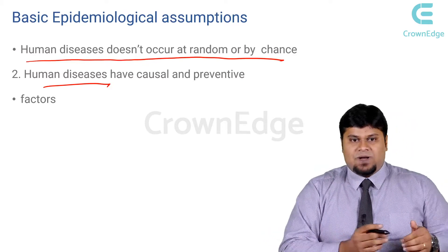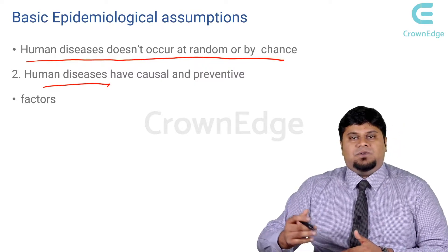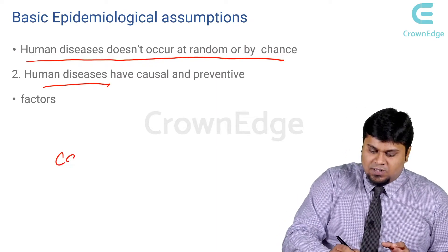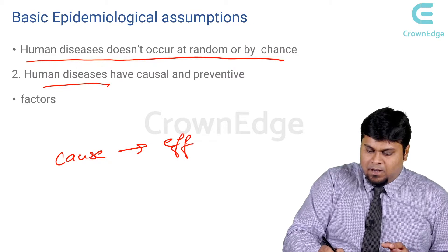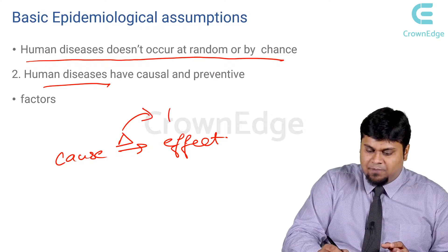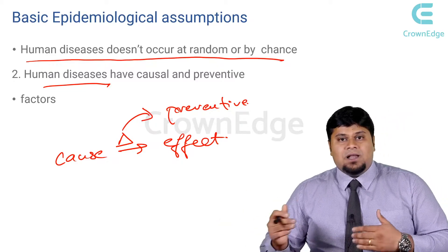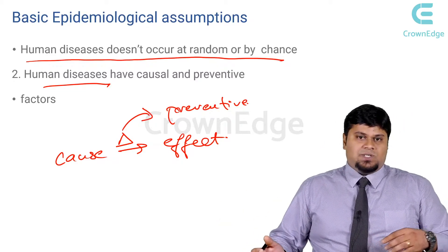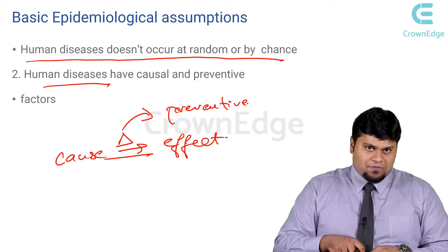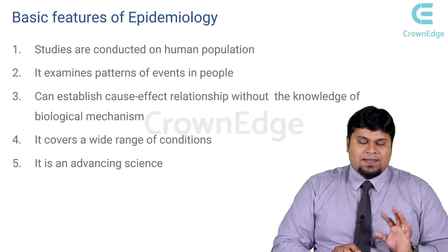Human diseases usually have causal and preventive factors. That means there is one particular agent in terms of infectious diseases, or one particular risk factor in terms of a non-communicable disease — but there is always a causative factor. It is more of a cause-and-effect relationship. When you understand this, you can automatically intervene, and so along with epidemiology of disease, the importance of prevention is also increased. Once you've established the cause-and-effect relationship, you can intervene by preventing at the right point of time with the right measure.